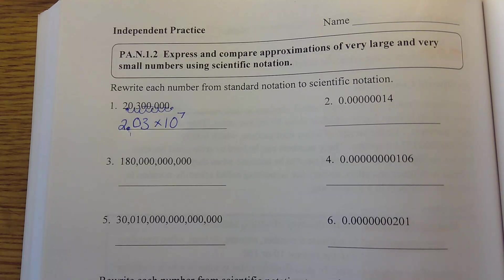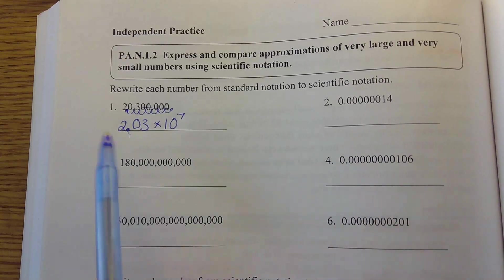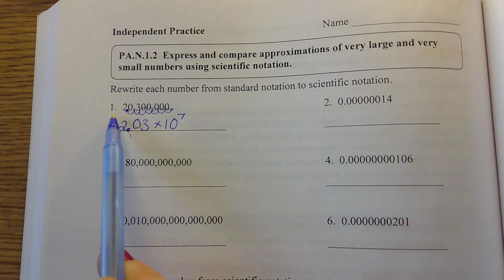How do you know where to stop when you're jumping? So I know to stop because I want one space to the left of my decimal. Oh, you want one space to the left? Yeah.